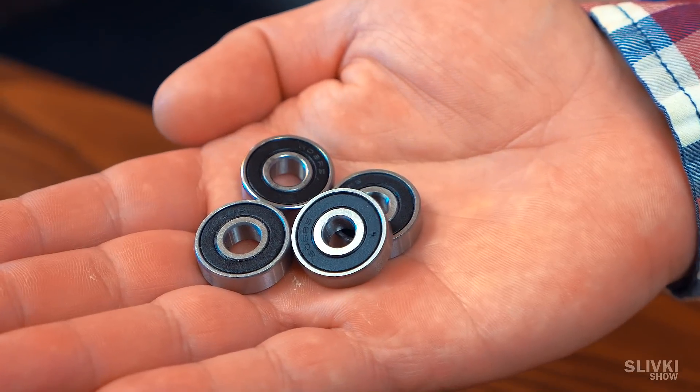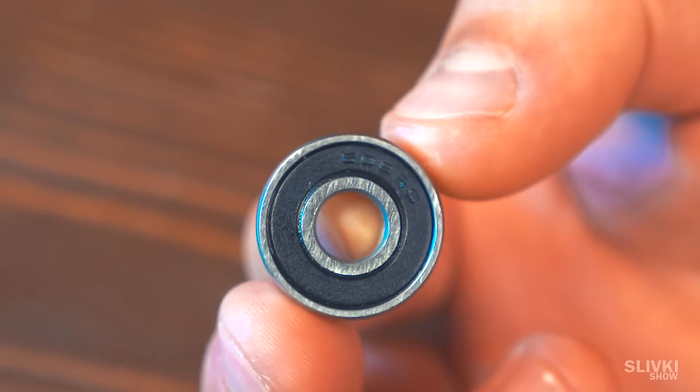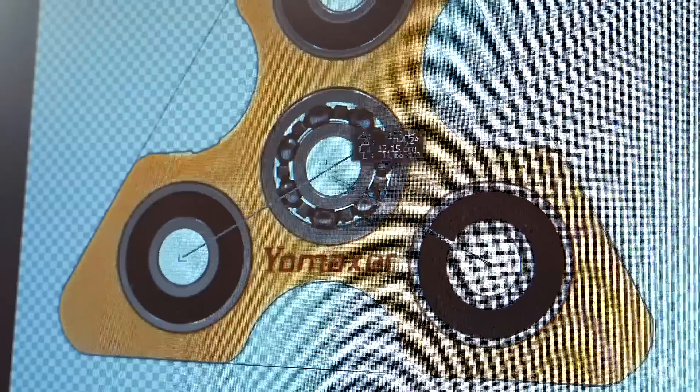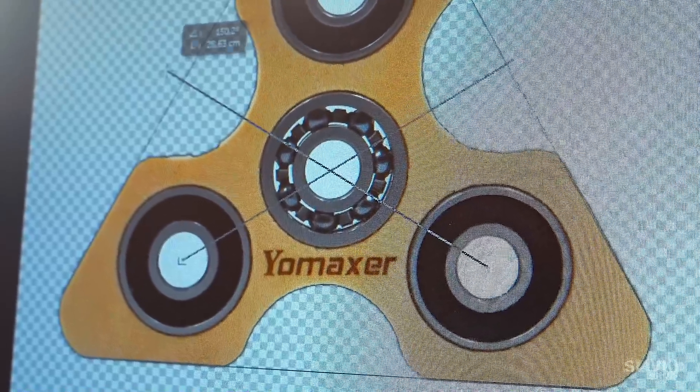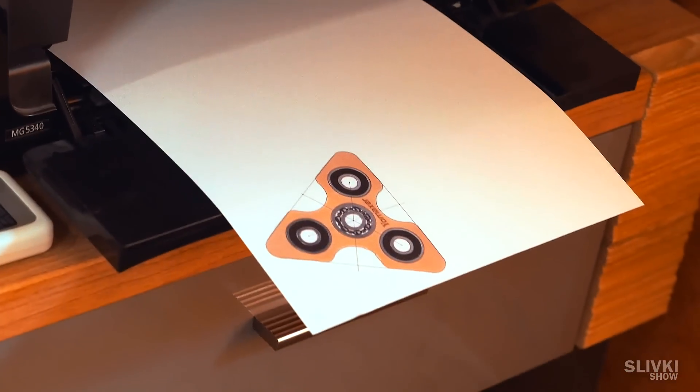First we bought few bearings in the hardware store. These kind of things that spin. Next we found three light-sided spinner templates on the internet. Add a few lines and print it out.